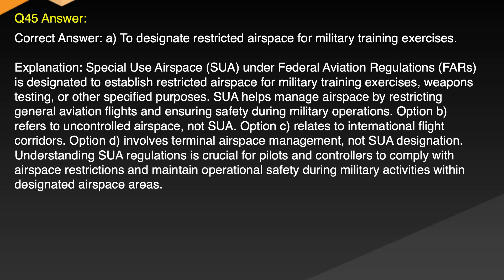Explanation: Special Use Airspace, SUA, under Federal Aviation Regulations, FARs, is designated to establish restricted airspace for military training exercises, weapons testing or other specified purposes. SUA helps manage airspace by restricting general aviation flights and ensuring safety during military operations. Option B refers to uncontrolled airspace, not SUA. Option C relates to international flight corridors. Option D involves terminal airspace management, not SUA designation. Understanding SUA regulations is crucial for pilots and controllers to comply with airspace restrictions and maintain operational safety during military activities within designated airspace areas.